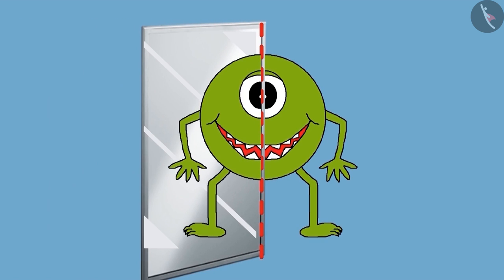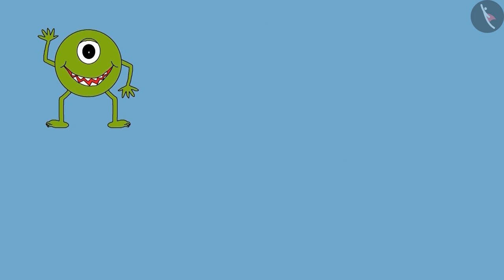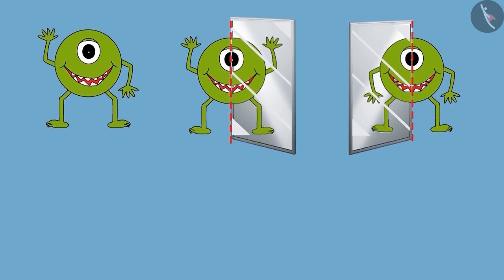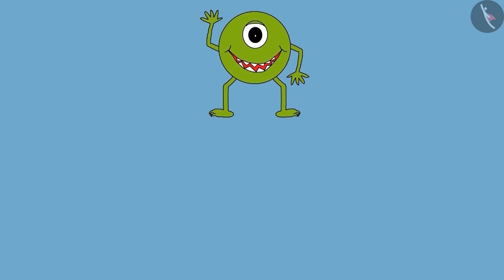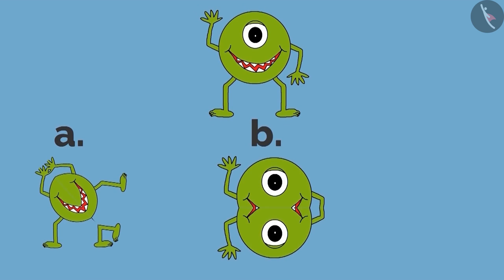Dear children, till now you have seen how pictures change in front of the mirror and you also learned that a dotted line is not always a vertical line. This line can be horizontal also. Now look at these pictures and tell where should we place the mirror on this picture so that the following pictures could be seen.